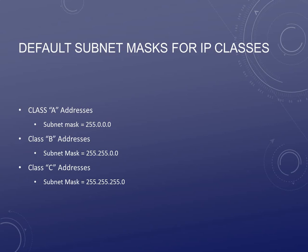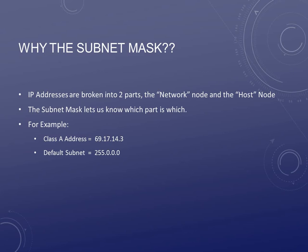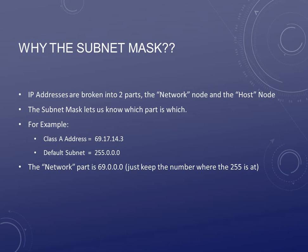You have to remember these because these are what we're going to change when we start subnetting. So why even use a subnet mask? Well, IP addresses are broken into two parts: one that we call the network node, and one that we call the host node. The subnet mask lets us know which is which. For example, take a Class A address: 69.17.14.3. The default subnet for Class A is 255.0.0.0. The network part of that IP address is the 69 — that's where the 255 is, in the first octet. The rest of it is the host: 17.14.3.